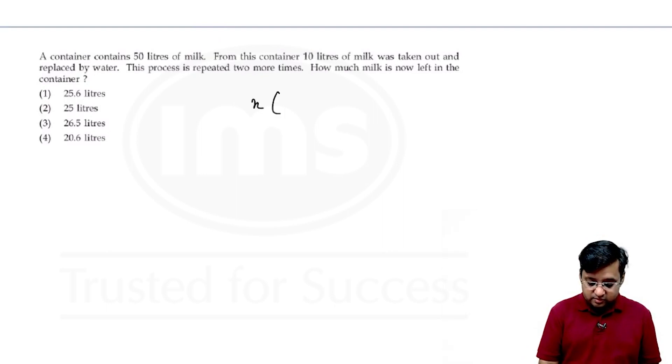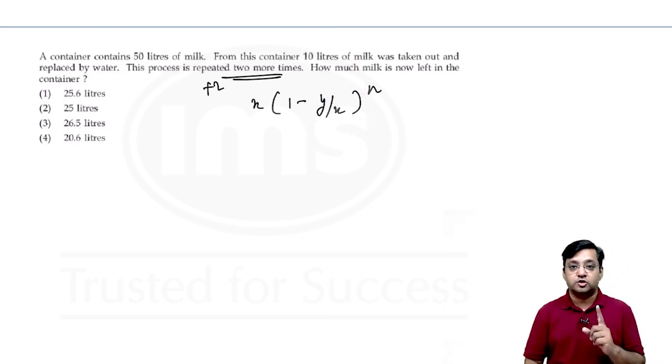Now what is the formula for this? This is x(1 minus y by x) to the power n. Now what is x, y and n? x is the initial value that is 50 litre. Y is the value which is going to be replaced, that is 10. And n is the number of times it has been replaced. Now how many number of times we have to replace? Of course there is two more time. That means three not two.